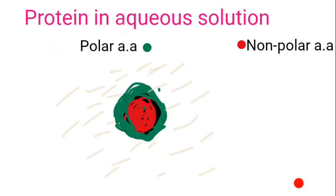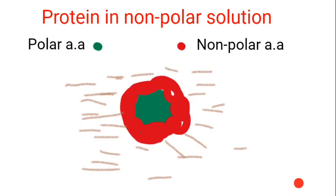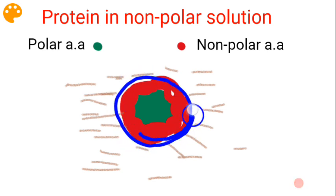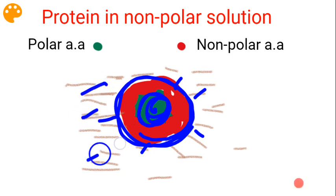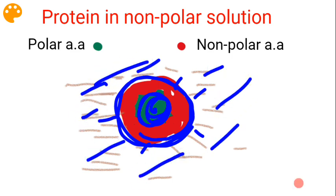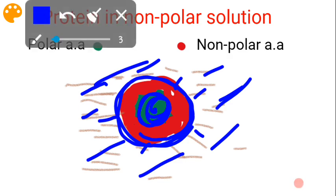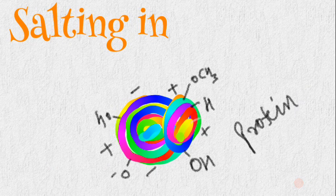The external polar amino acids will make hydrophilic interactions with water molecules in order to stabilize the protein in aqueous solution. In non-polar solutions, the non-polar amino acids will occupy the external portion of the protein, while the interior will be constituted by polar amino acids. The outer non-polar amino acids then make hydrophobic interactions with the surrounding non-polar solution for stabilization.